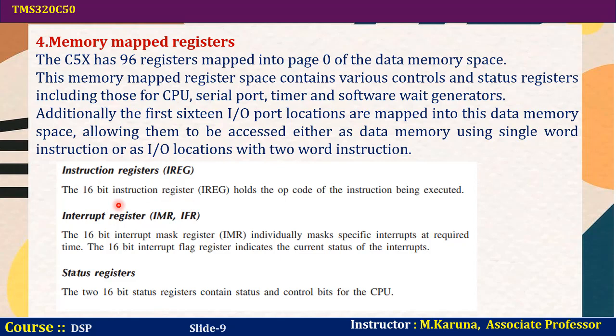The instruction register holds the opcode of the instruction being executed. The interrupt mask register (IMR) and interrupt flag register are 16-bit registers. The IMR individually masks specific interrupts at required times. The interrupt flag register indicates the current status of interrupts — whether an interrupt is present or not. There are two 16-bit status registers which contain status as well as control bits for the CPU. Control bits are set by the user; status bits are set by the processor.